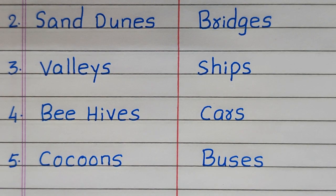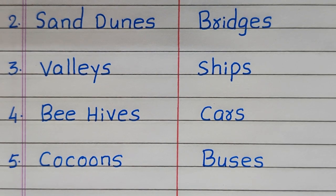Third man-made structure is ships. Fourth, cars. Fifth, buses.